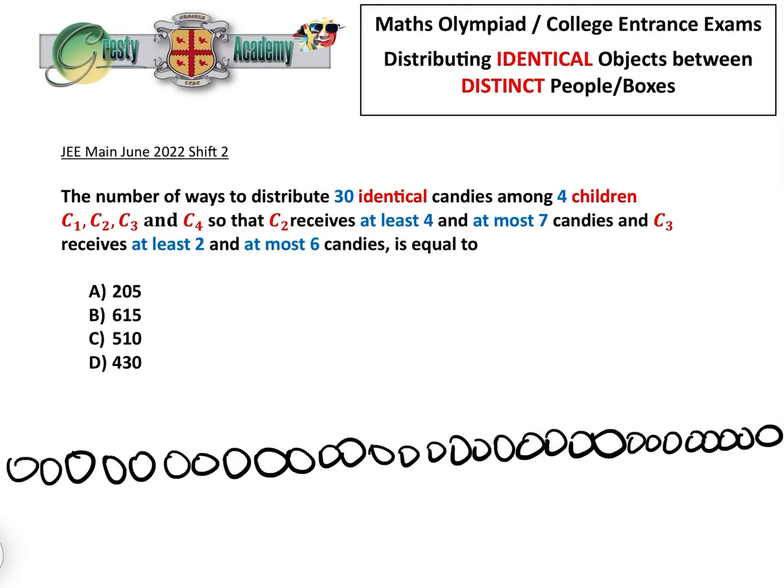In the previous video we did a question on distributing identical objects between distinct people and boxes. Today we're going to do one which is slightly more complicated with more constraints, not only on the minimum number of candies they can receive but also on the maximum number.